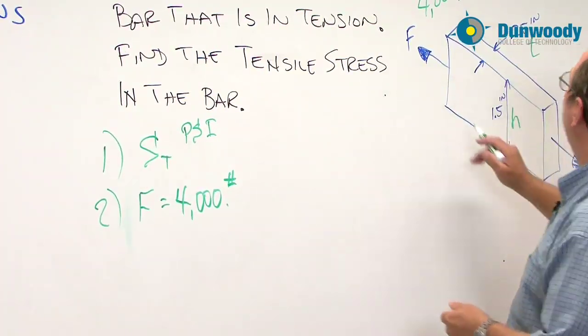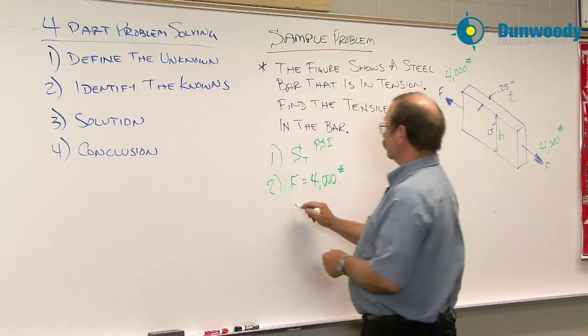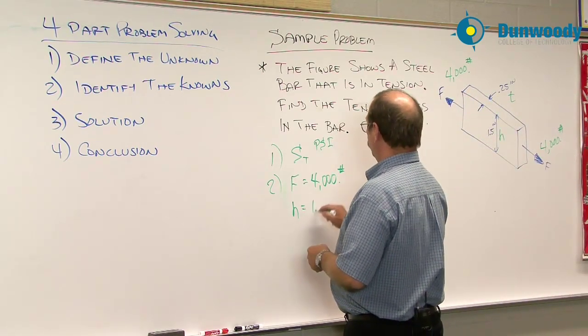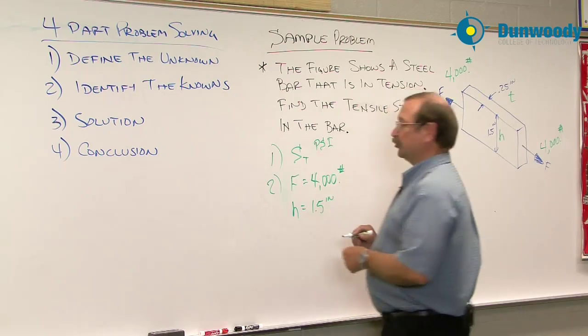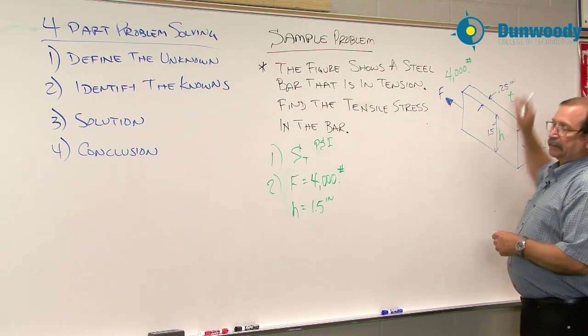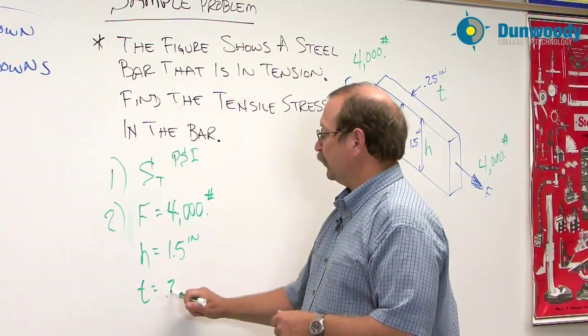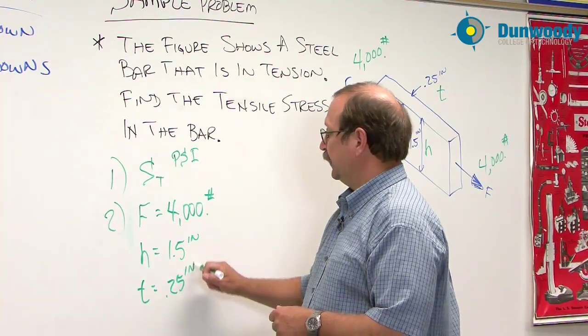The next thing that we have is the height. Our height is one and a half inches, so little h is 1.5 inches. Then we have the thickness of the material, that's a quarter of an inch. So little t is 0.25 inches.